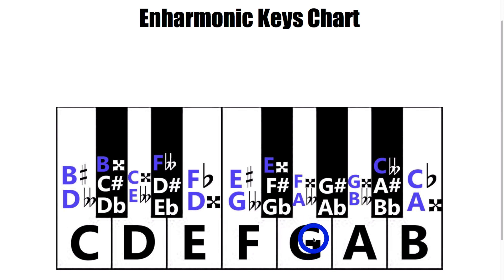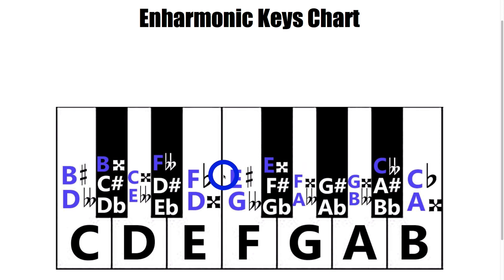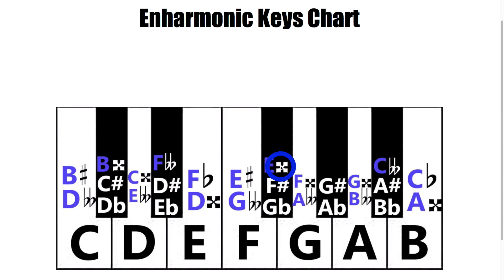Let's look at one more example: this G here is called a G natural, and it can also be called an A double flat or an F double sharp. If you take a look at every single one of these notes, you'll notice that every one of them has three enharmonic equivalents, except for the A-flat and G-sharp right here. The reason for that is this is the only note that doesn't have a double sharp or double flat natural note. For example, the only double sharp would be this note here, and that's not a natural key — so we can't call it a G-flat double sharp, that wouldn't make any sense. You also couldn't call it a B-flat double flat or something like that.